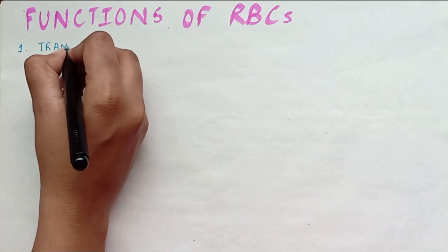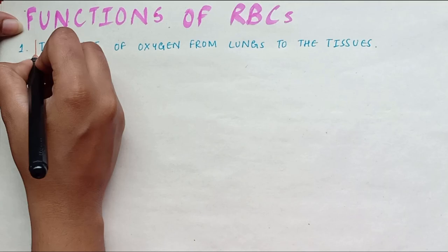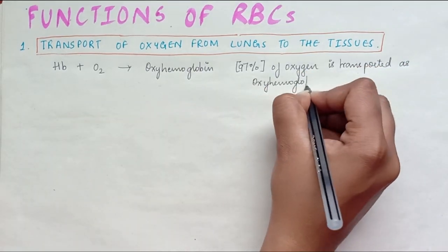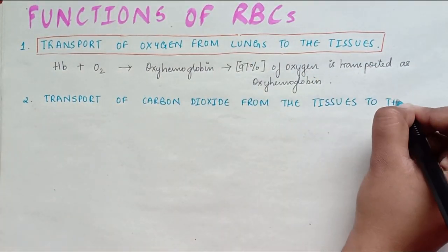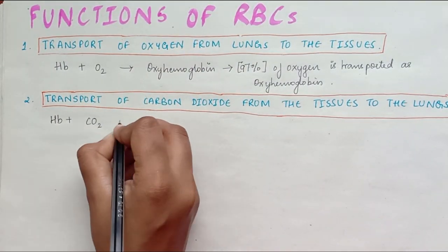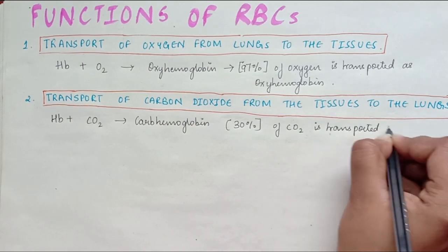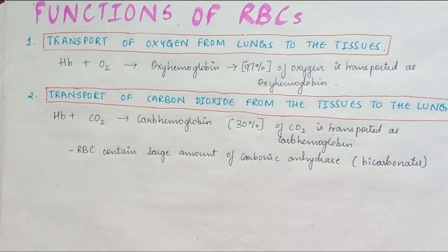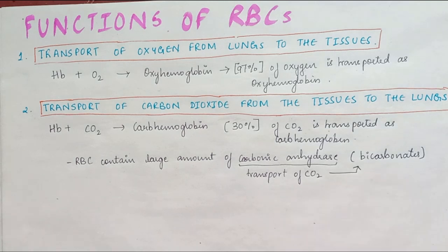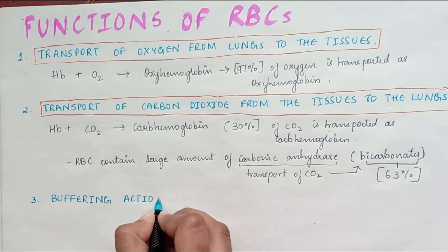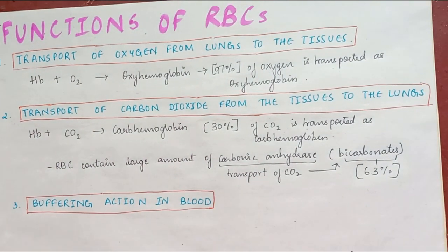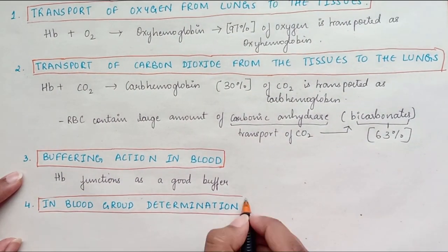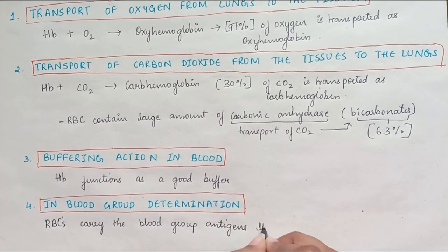Functions of red blood cells: First, transport of oxygen from lungs to tissues — hemoglobin in RBCs combines with oxygen to form oxyhemoglobin, and 97% of oxygen is transported this way. Second, transport of carbon dioxide from tissues to lungs — hemoglobin combines with CO2 to form carboxyhemoglobin, transporting 30% of CO2; RBCs also contain large amounts of carbonic anhydrase necessary for bicarbonate formation, transporting 63%. Third, buffering action of blood — hemoglobin functions as a good buffer. Fourth, blood group determination — RBCs carry blood group antigens such as A-agglutinogen. Thank you for watching the video.